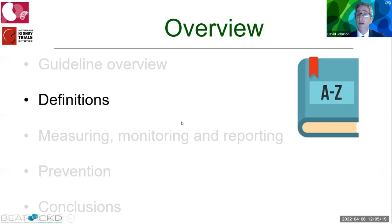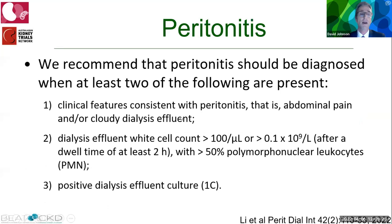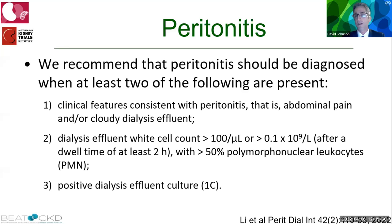There are quite a few new definitions in the ISPD guidelines. The first is not new, but is often not followed in clinical practice or publications. The ISPD guidelines recommend peritonitis be diagnosed when at least two of the following are present: clinical features consistent with peritonitis (abdominal pain and/or cloudy dialysate effluent); dialysate effluent white cell count greater than 100 per microlitre with a dwell time of at least two hours and at least 50% polymorphonuclear leukocytes; and positive dialysis effluent culture. That is a 1C recommendation.